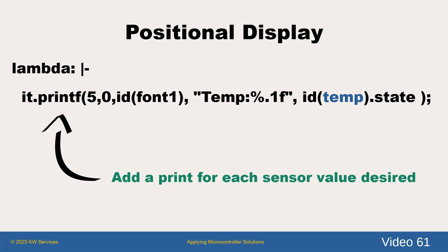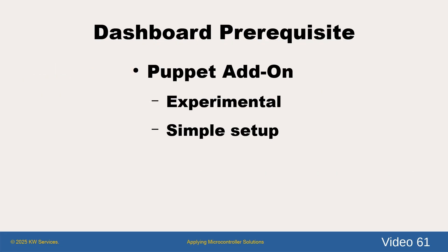To configure the ESPHome YAML, we studied the online ESPHome section on ePaper. It gives us an example configuration of the hardware and a lambda for a positional display of ESPHome sensors. You simply add another printf statement. Fortunately, these printfs mimic C code printfs, so the syntax should be familiar to many programmers.